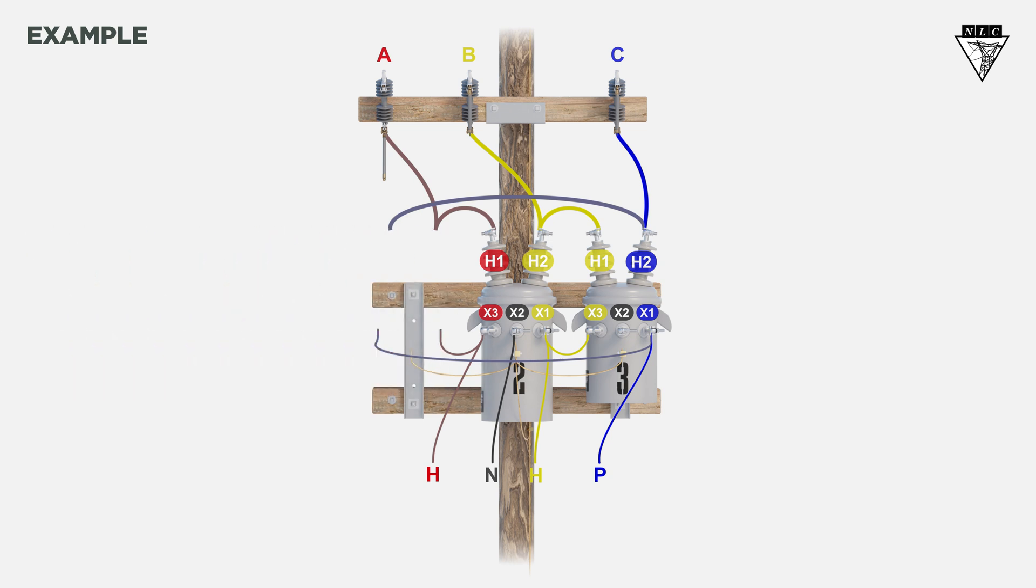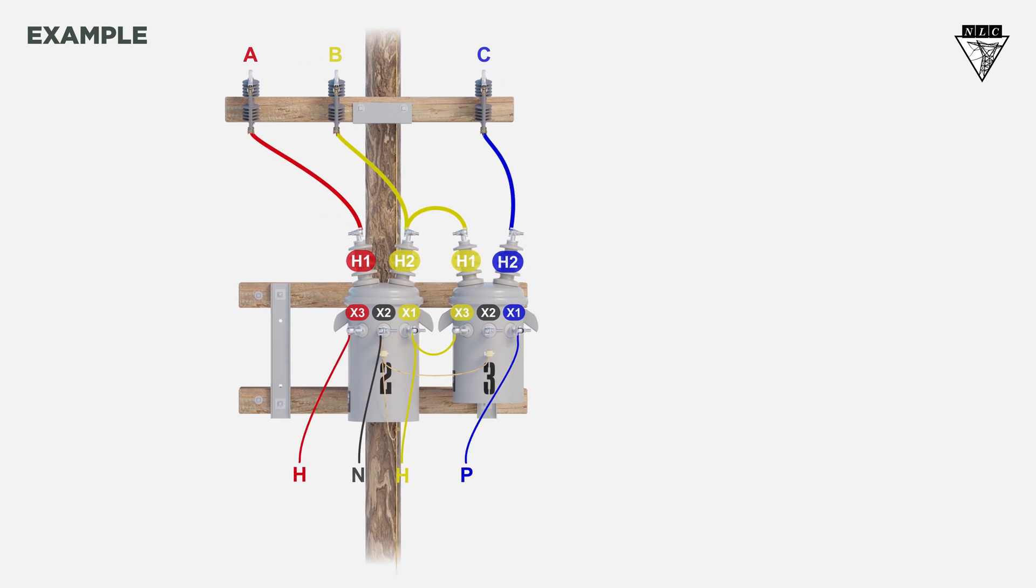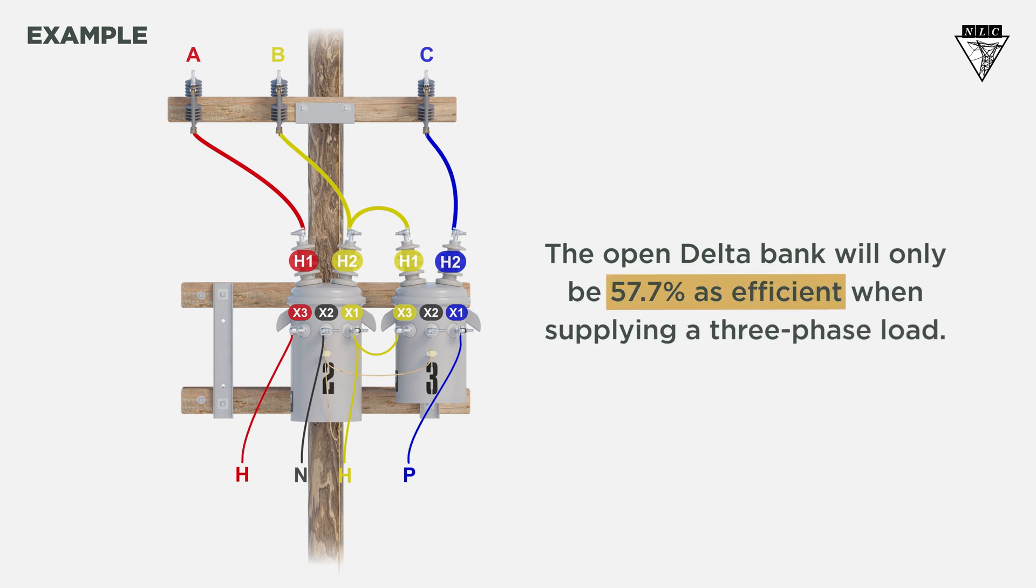However, the customer requests that the power be returned immediately. In this scenario, you can reconnect the delta delta bank as an open delta connection and continue to run power to the customer. However, the open delta bank will only be 57.7 percent as efficient when supplying a three-phase load, so it's best used temporarily.